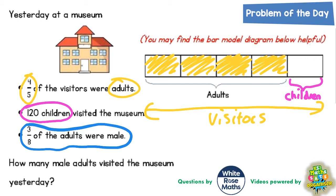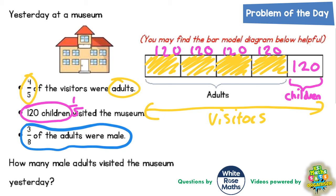So we've got adults plus children, and we're told that 120 children visited the museum. The adults already take up four-fifths of the bar, so the one-fifth that is left must be the children. It says there are 120 children, so that 120 must be the one-fifth that's left. I'm going to write 120 on the one-fifth that's left. If that fifth is worth 120, then each of the other fifths is also worth 120, because all the fifths are worth 120.